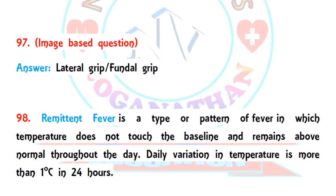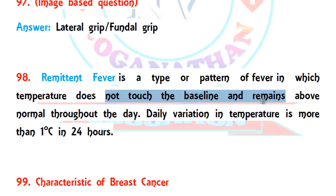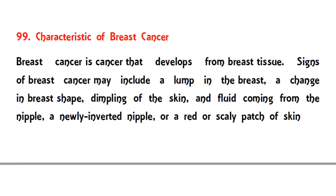Question 98 covers remittent fever. It is the type or pattern of fever in which the temperature does not touch the baseline and remains above normal throughout the day. The daily variation in temperature is more than one degree Celsius within 24 hours, so the temperature cannot remain stable — it goes up and down.